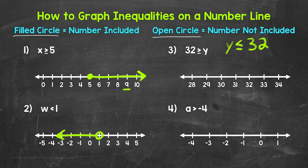Now let's graph this on the number line. We need a filled circle at 32, and then since y is less than or equal to 32, the arrow needs to point left — the direction of all of the numbers less than 32. So we need an arrow pointing left. And now we have our inequality graphed. The filled circle shows that we are including 32, and then the arrow represents all of the numbers less than 32.